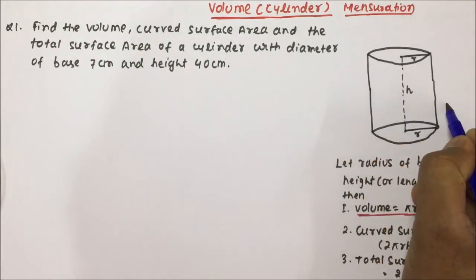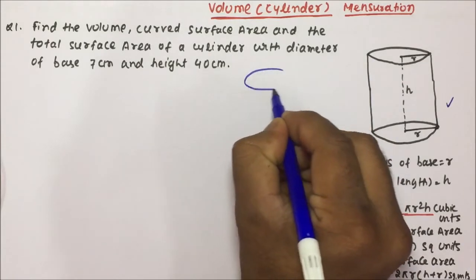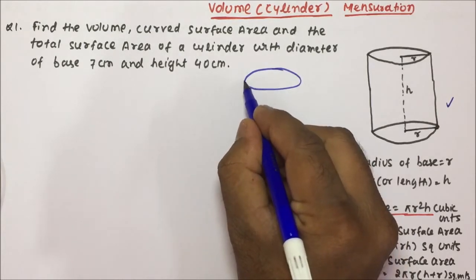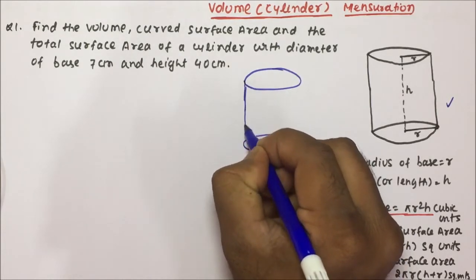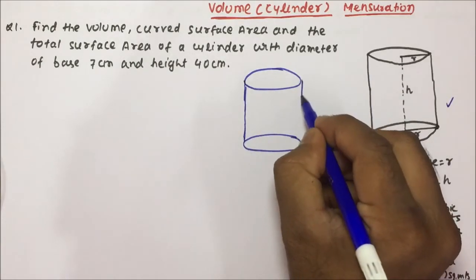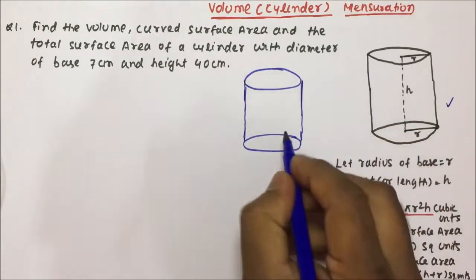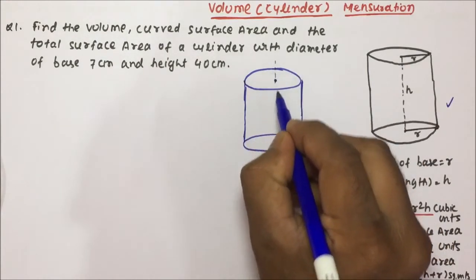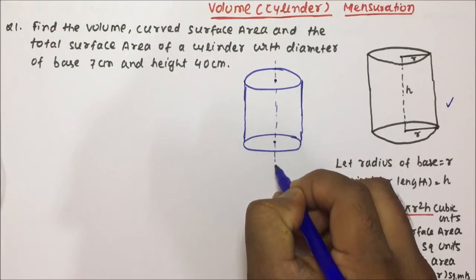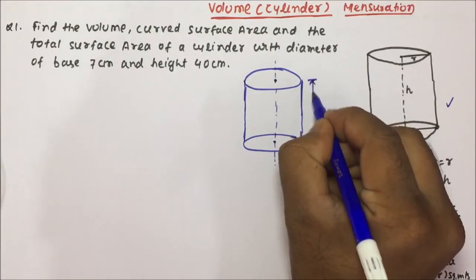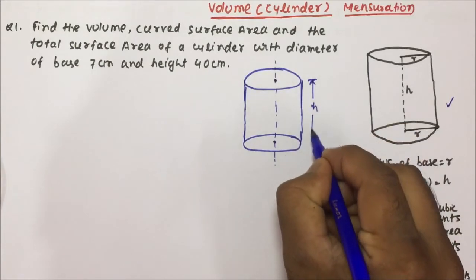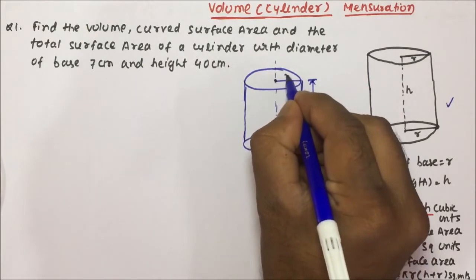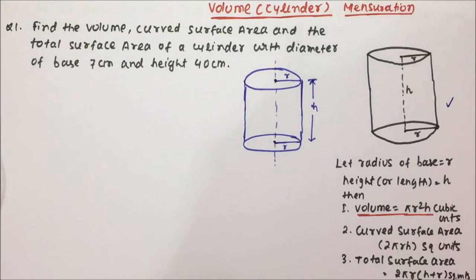If you look closely at a cylinder, it will have two circles and one curved surface. There will be one line which crosses through the center — that is nothing but the height. This distance is the height, and this is the radius of the circle, and both the radii will be equal.